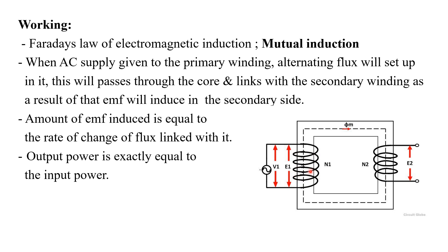When we apply an alternating current to the primary side of the transformer, an EMF E1 will be induced across the primary side. When we apply alternating current to this primary side, alternating flux will set up in the primary winding. This flux will pass through the core and completely flow through the secondary winding. Due to this, an EMF will be induced in the secondary winding of the transformer. This is the working principle of the transformer.